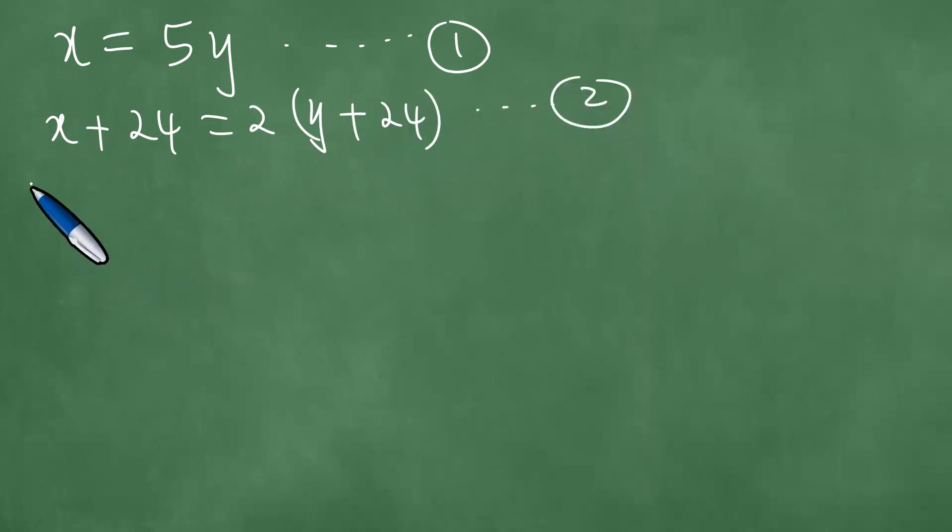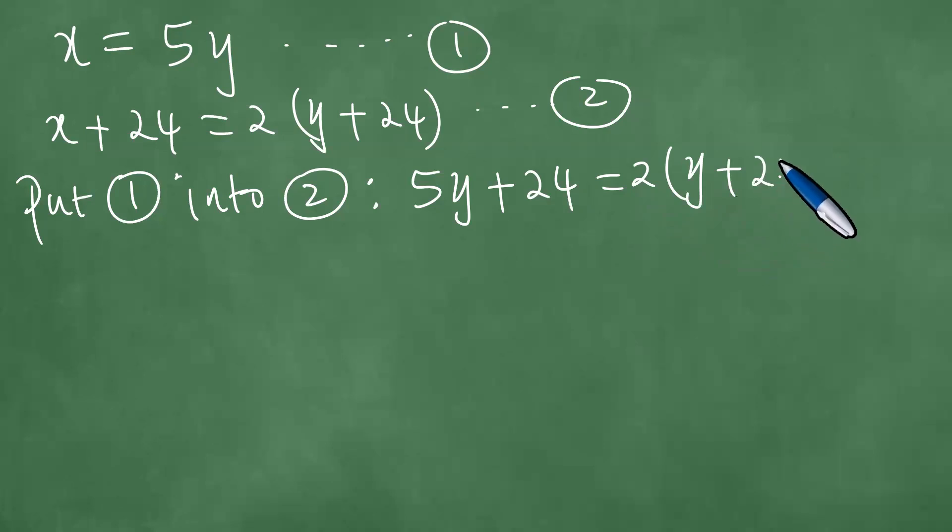And you're going to say put one into two. So that we have five y plus 24 equals two into y plus 24.